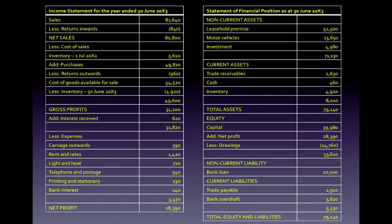On the left you have the income statement for the year ended 30th of June 20x3. I'm using the term income statement now because this is the new name for the statement of profit and loss. On the right is your statement of financial position as at 30th of June 20x3. The difference between the statement of financial position and the income statement is that the statement of financial position is as at a particular point in time, whereas the income statement is for a period of time.